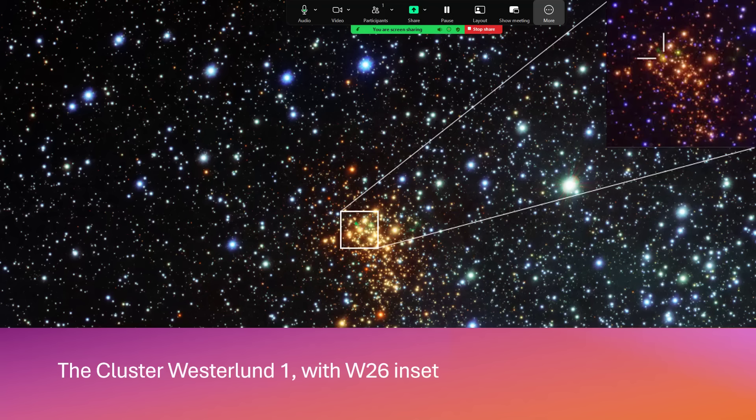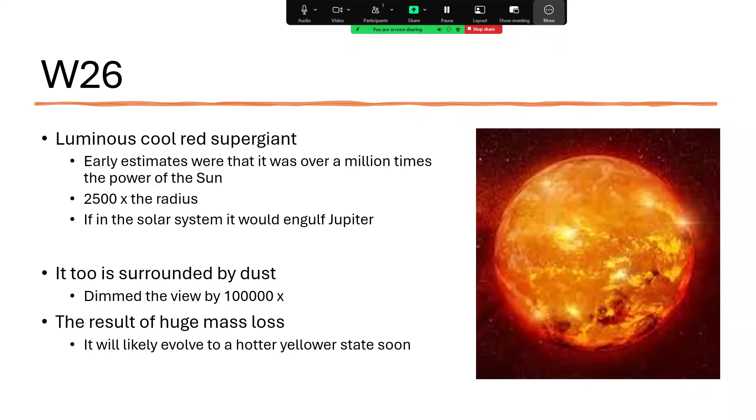And W26 is another of these cool red supergiant stars, originally estimated to be putting out over a million times the power of our sun and be 2,500 times the radius. That's enormous. It would go right out to the orbit of Jupiter. But again, there's so much dust around that the view we are getting from it is being dimmed by a factor of 100,000 times. And that dust is the result of the huge mass loss that this star is also putting out.